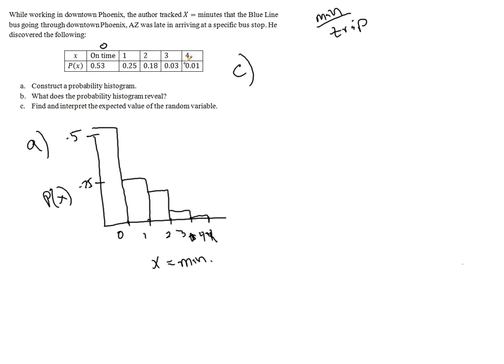Well if you think about this, this adds up to 1, or 100%. So if you treat this as 100 different instances, 53 times it's 0 minutes late, 25 times it's 1 minute late, 18 times it's 2 minutes late, 3 times it's 3 minutes late, 1 time it's 4 minutes late. So if you figure out the total number of minutes that the bus has ever been late for, and divide it by 100, that will give you the average.